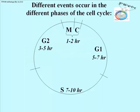Here is a cell cycle showing how much time each phase lasts, and it's variable depending on the cell type. As you can see, mitosis and cytokinesis lasting one to two hours is the shortest period in the life of a cell.